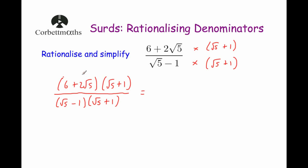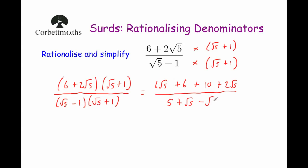We're going to use FOIL twice to expand both brackets. So 6 times root 5 would be 6 root 5. 6 times 1 would be plus 6. 2 root 5 times root 5: root 5 times root 5 is 5, multiplied by 2 is 10, so plus 10. And 2 root 5 multiplied by 1 would be plus 2 root 5. On the denominator: root 5 times root 5 is 5. Root 5 times 1 is plus root 5. Minus 1 times root 5 is minus root 5. And minus 1 times 1 is minus 1. The root 5 and minus root 5 cancel out. So the denominator is just 5 take away 1, which is 4. On the numerator, 6 root 5 plus 2 root 5 is 8 root 5, and 6 plus 10 is 16.